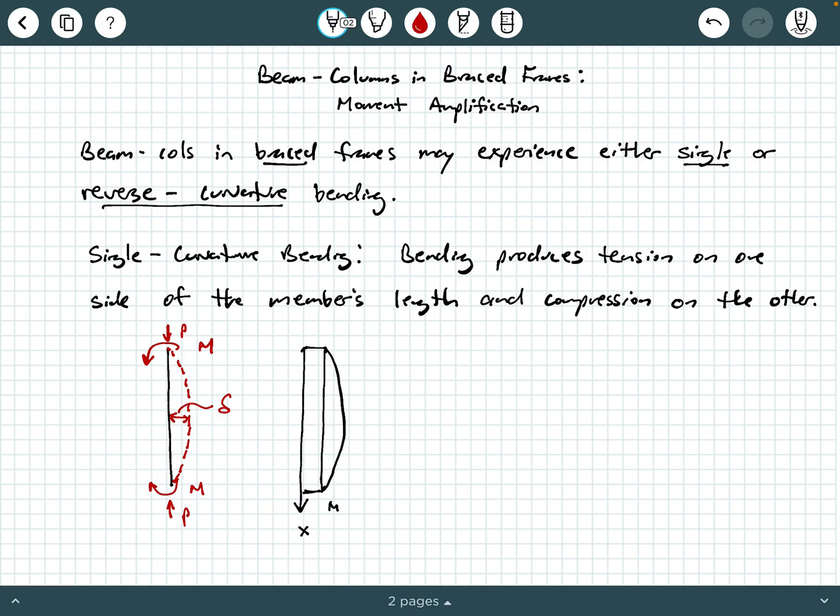So you're going to develop a displacement little delta, and then, of course, this height of the center part of the moment, of the superimposed moment diagram, of course, is called P times delta. So in one of my other videos, we talked about the P little delta effects. And so if you superimpose these two diagrams together, you get M plus P little delta. So that's single curvature bending.